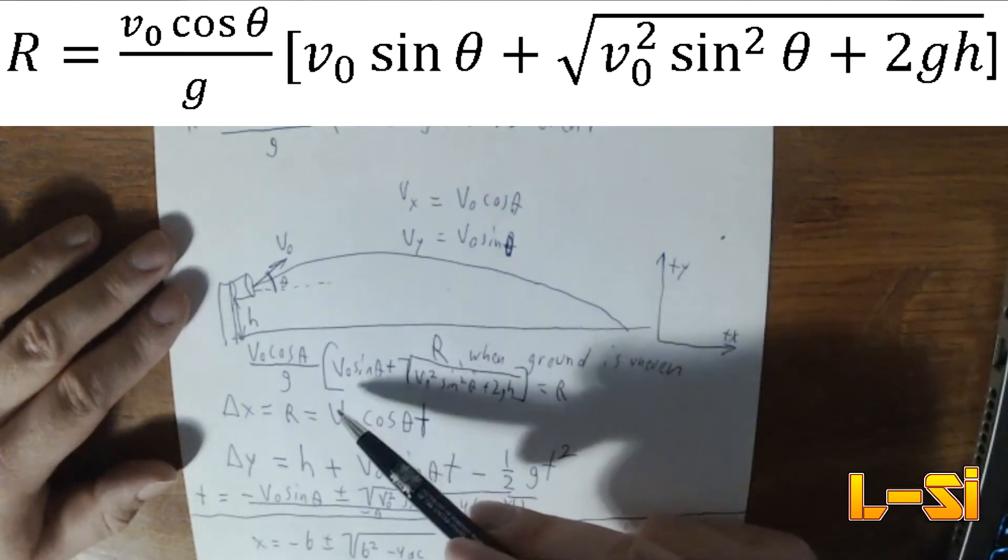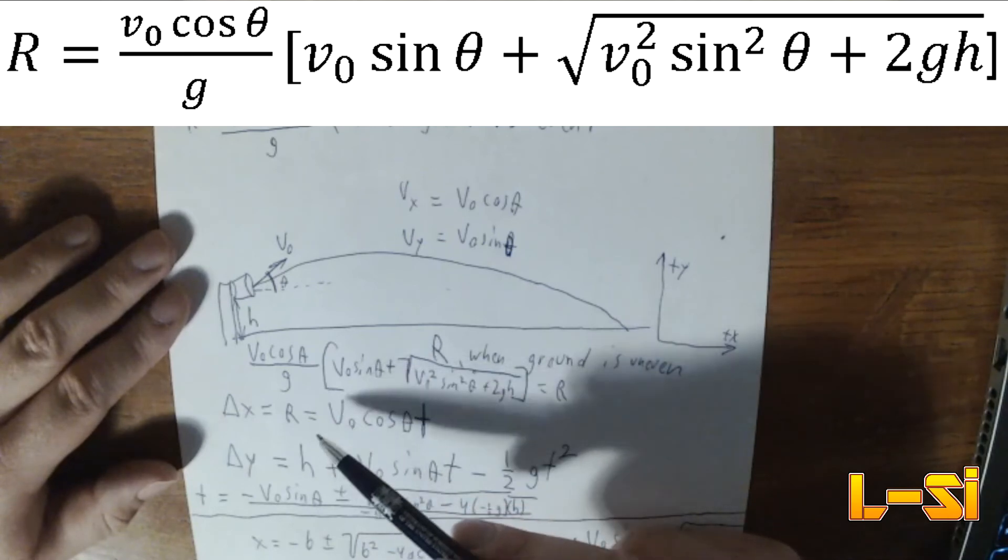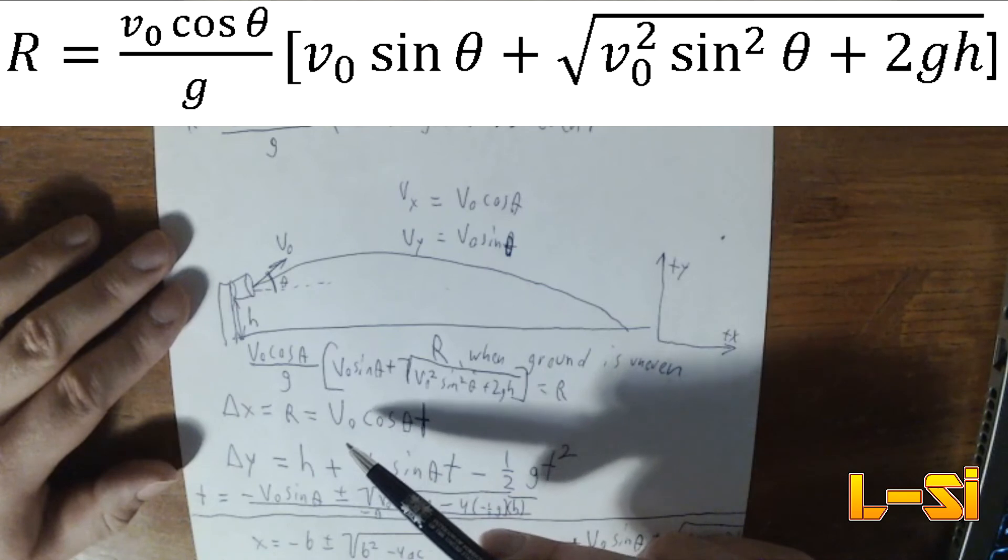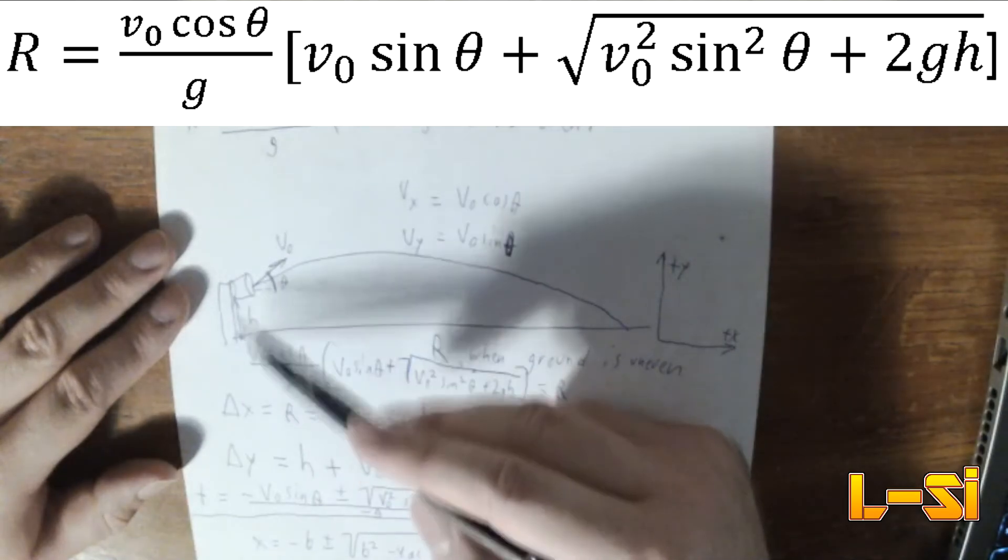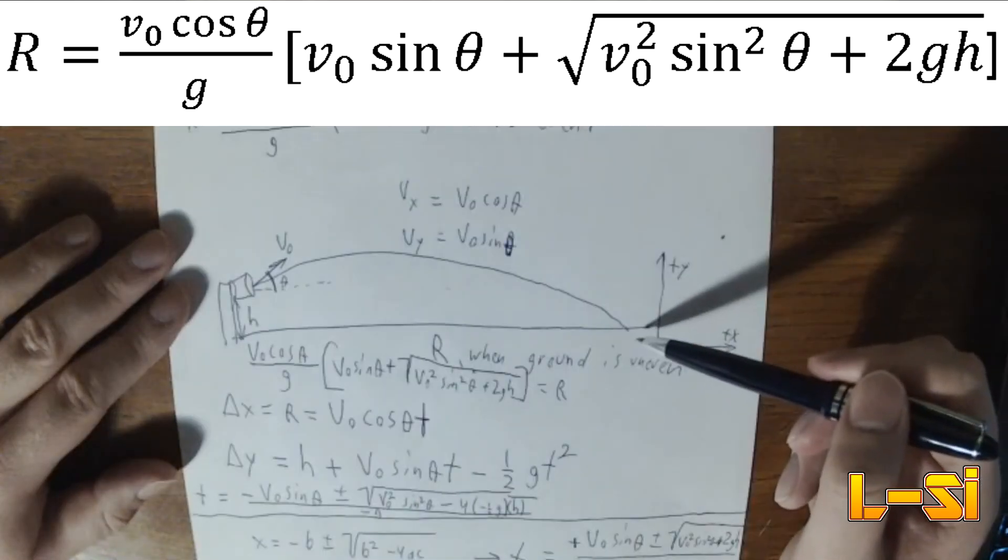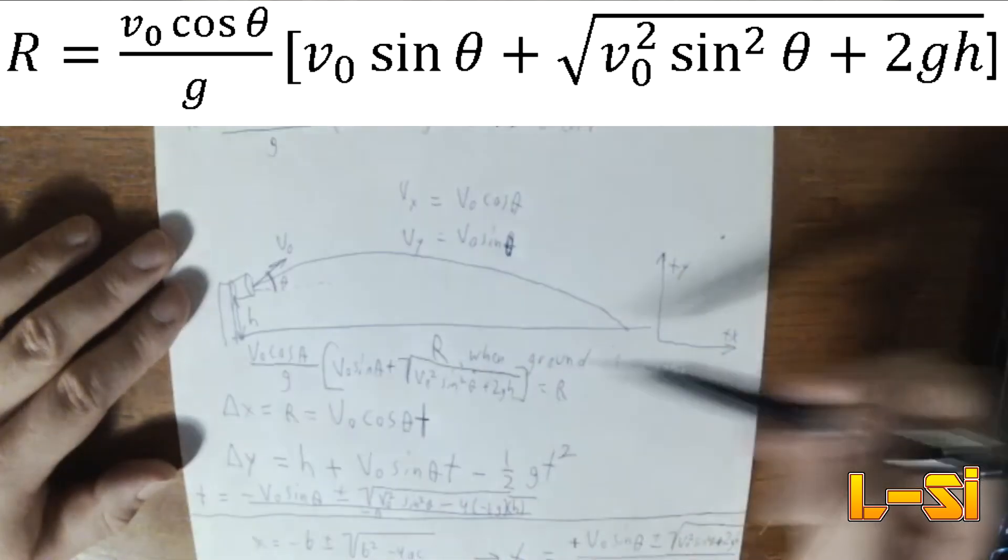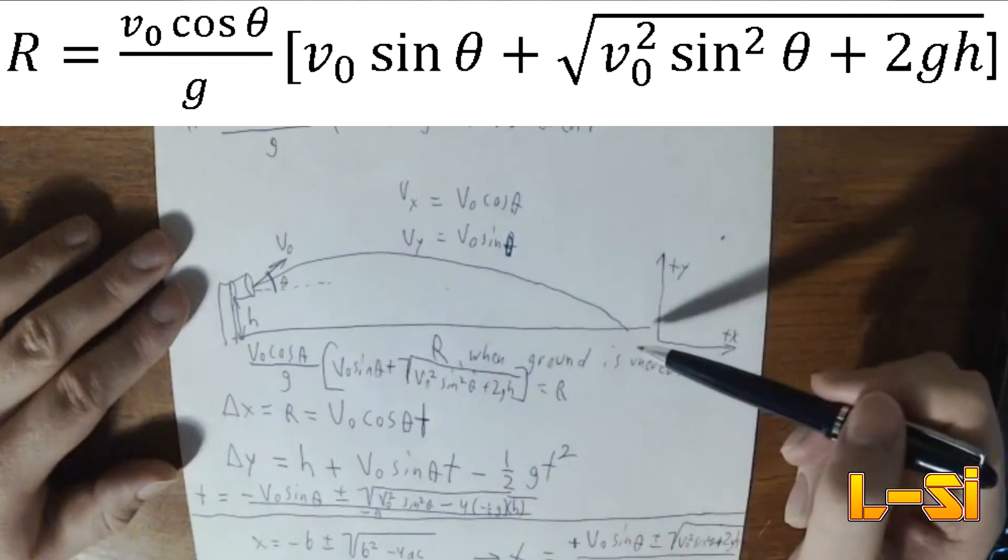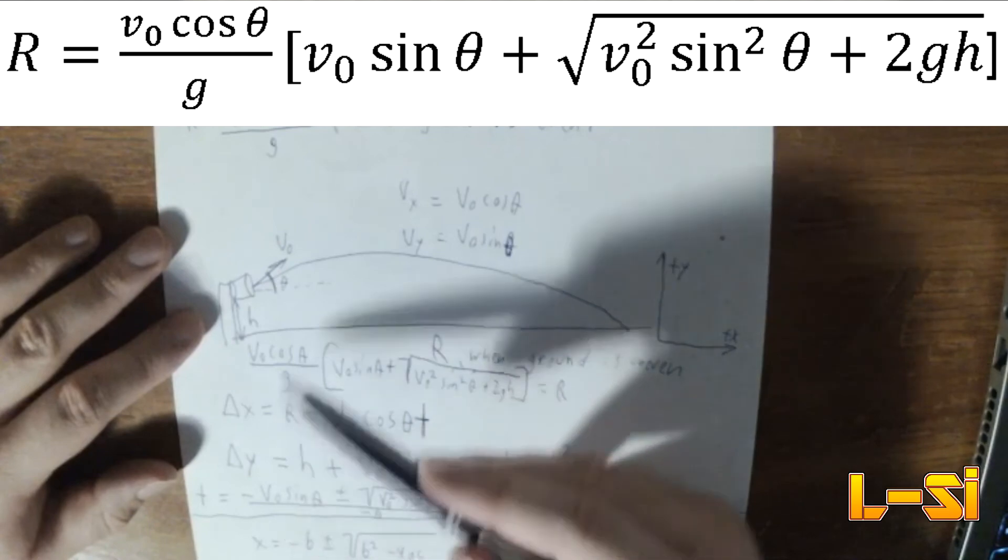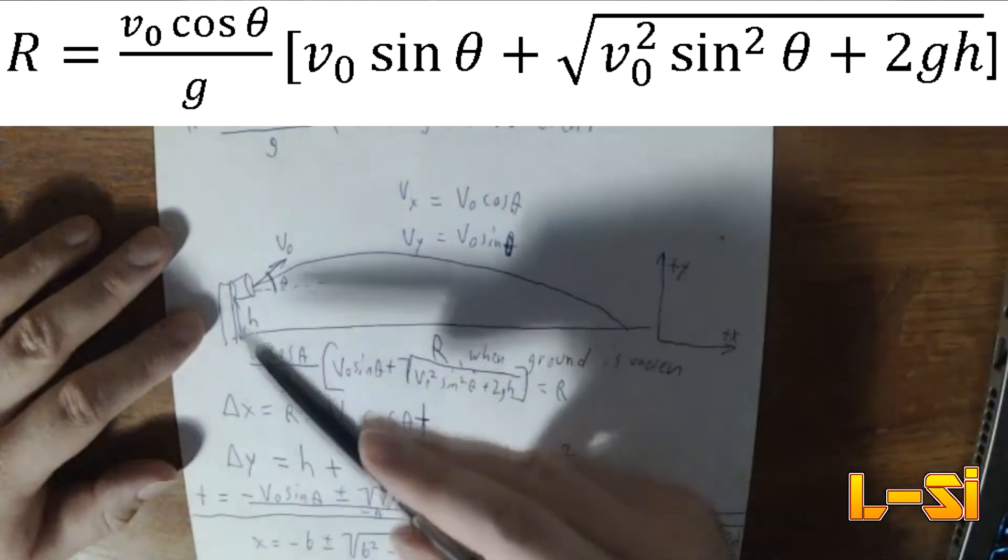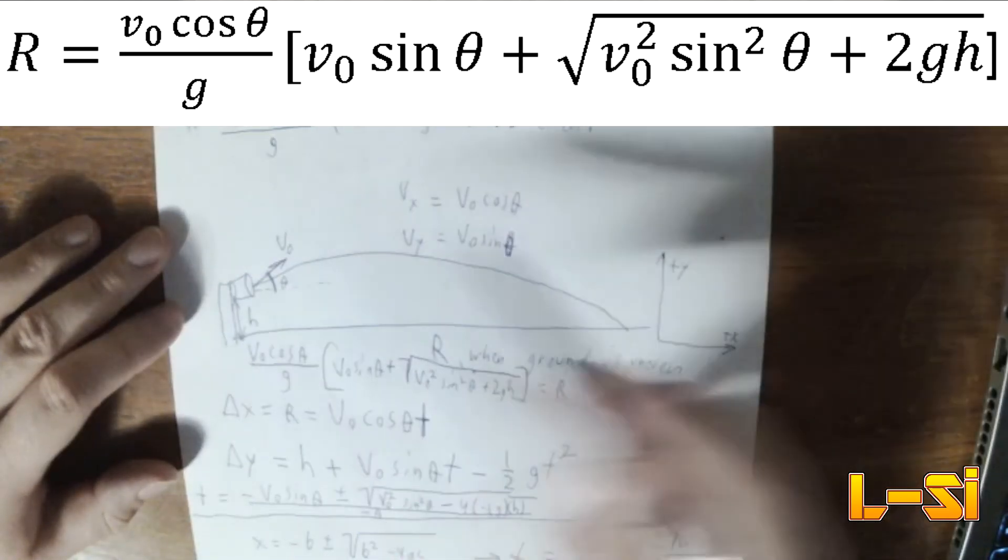Where theta is your initial launch angle, V-naught is your initial launch velocity, G is the acceleration due to gravity, and H is your height difference between where, between what you consider to be zero. So whatever you define as the origin, this is how high or how far beneath your origin the actual projectile is launched from.